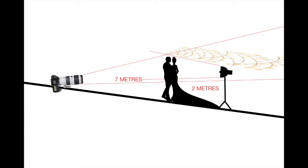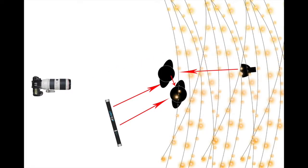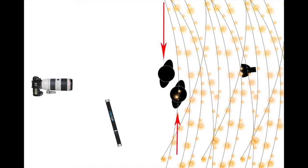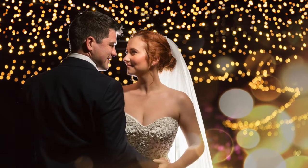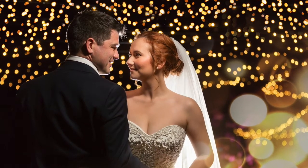And now for the tricky part. This particular slide shows you the direction of light from both my flash and my LED constant light. Previously I told you that we'd moved the groom slightly in front of the bride — here's the reason why. I moved him slightly forward then told them both to look at each other. If you follow the red arrows, you can see that the light comes from the flash, hits the groom, and then bounces across over to the bride.